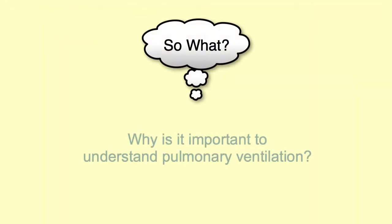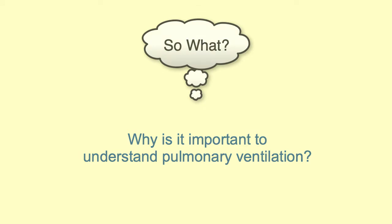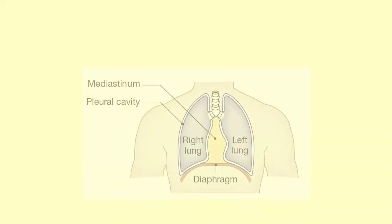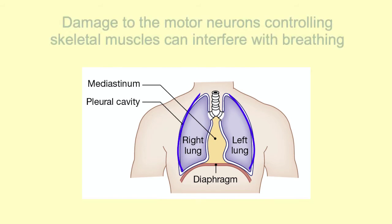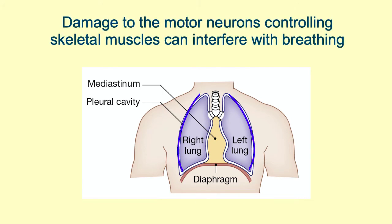So what? Why is it important to understand pulmonary ventilation? Well, as you can see, this crucial process is a function of skeletal muscle contraction and relaxation. The lungs, attached to the wall of the thoracic cavity by the pleura, are entirely passive throughout this process. Anything that damages the motor neurons controlling skeletal muscles can interfere with breathing.